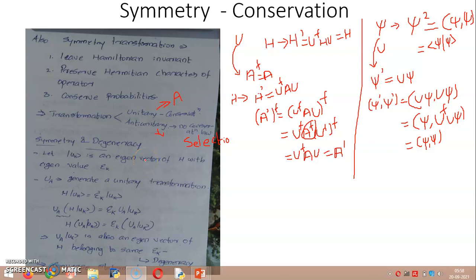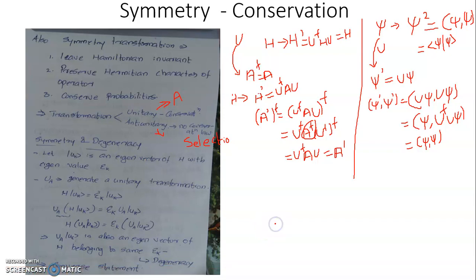We have been talking about the concept of symmetry and the conservation laws associated with it. We have seen that there are certain dynamical developments of the system such that during this act, the Hamiltonian of the system becomes invariant. Once this happens, we assume that there will be some operators that commute with the Hamiltonian of the system, such that the observable corresponding to the operator will be a constant of motion. The prime requirement for such a variable to be a constant of motion is that it must commute with the Hamiltonian of the system.